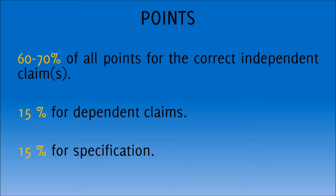So, correspondingly, the 15% for the specification are more or less unimportant, you may say. But this is important: those 15 points can easily be collected, as long as you come well prepared to the examination — for example, by using template text and stuff like that. So you see here by those points that really the focus of your time and general interest needs to lie in the drafting of the allowable claim set in Paper A.